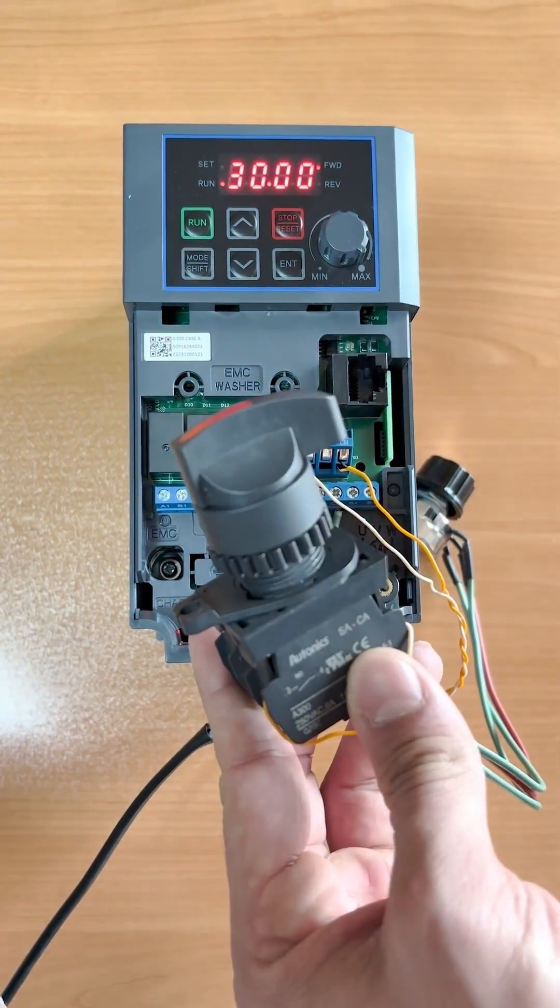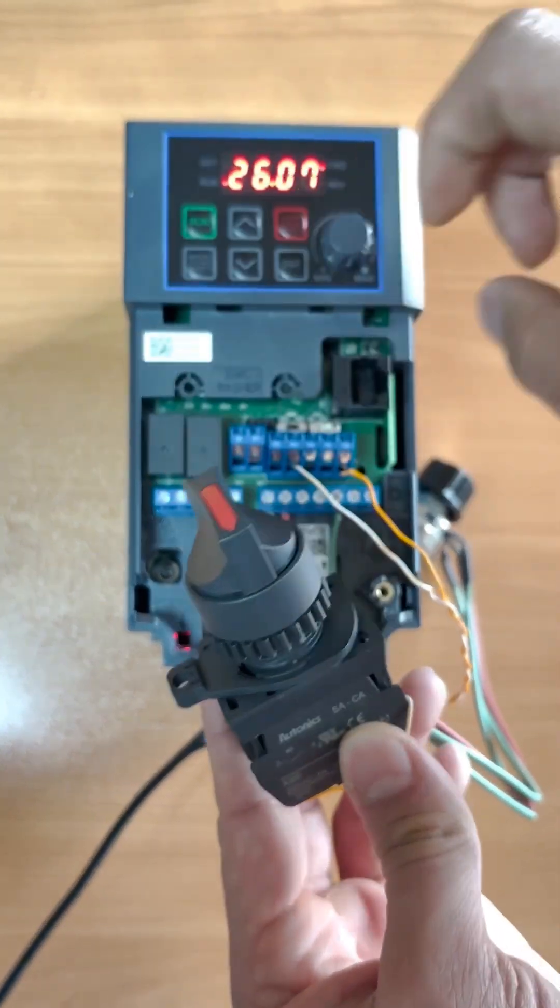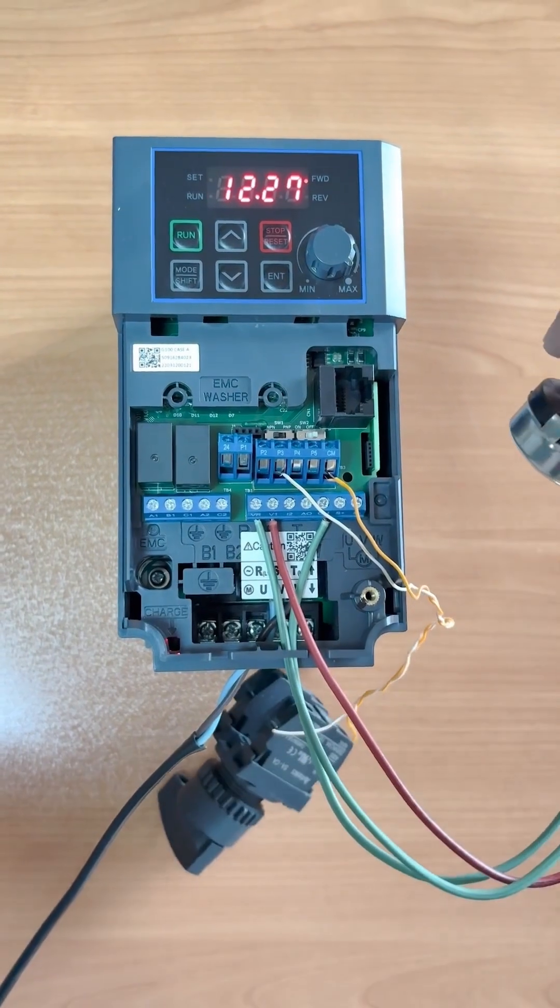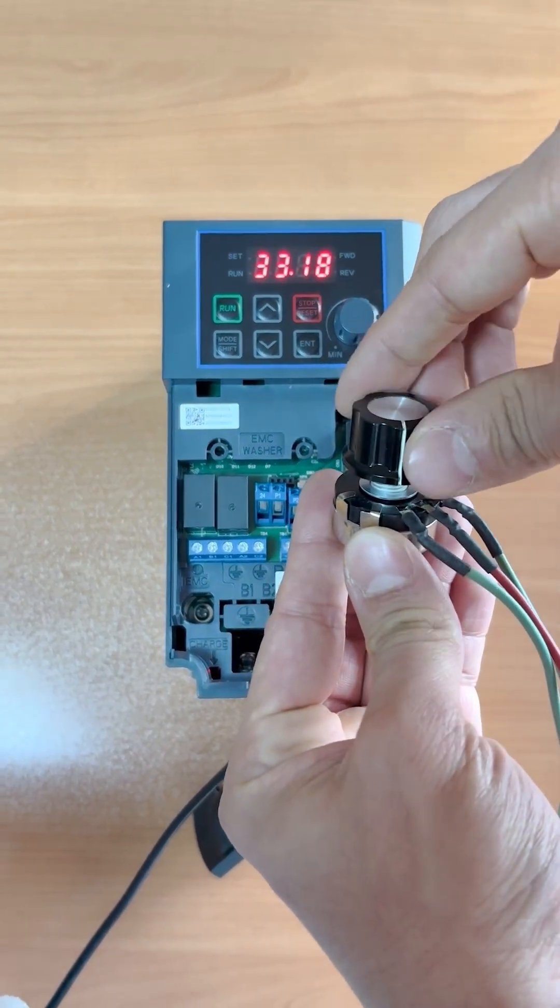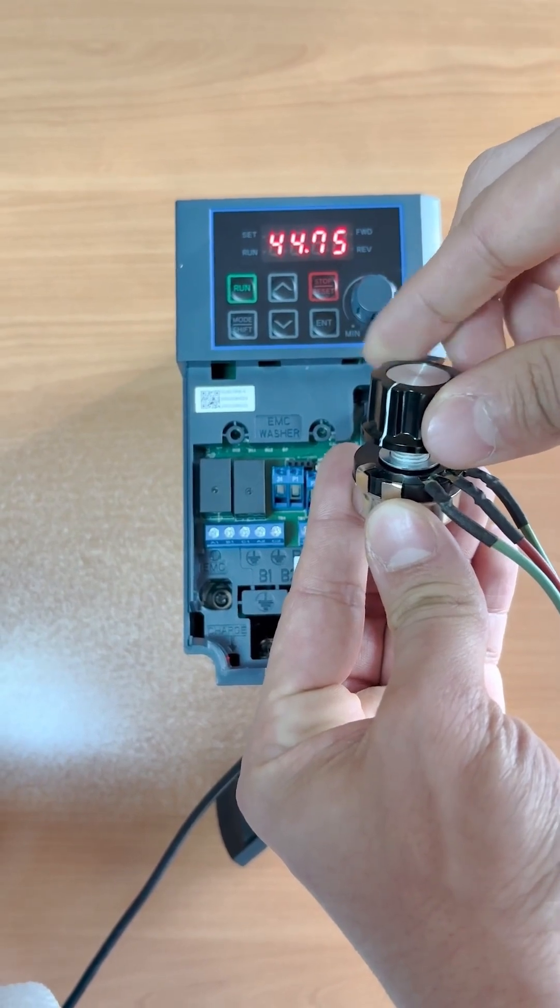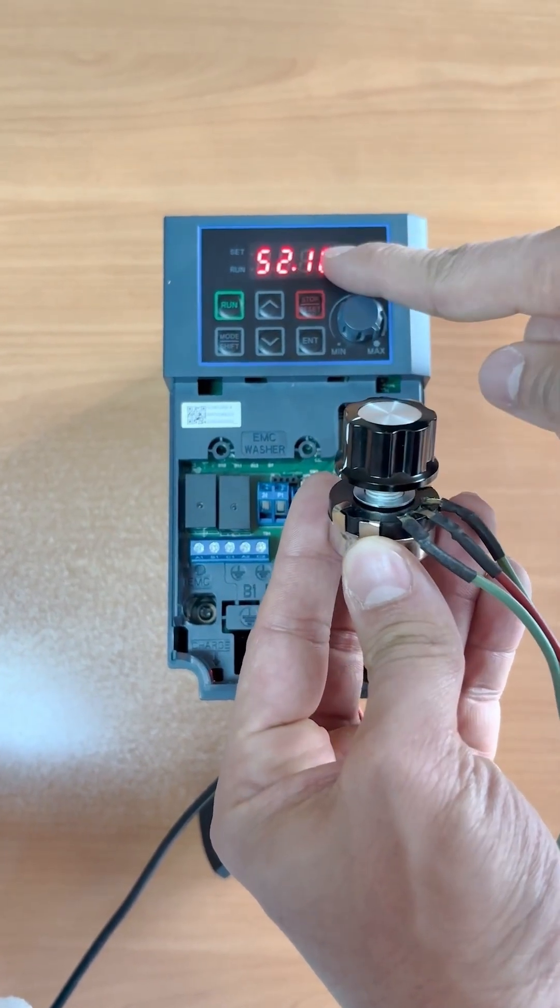If this digital input is activated, now you'll see that by adjusting this potentiometer, my frequency value changes. So what does that mean?